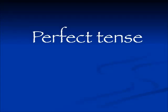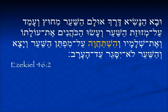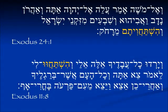Here are some examples from the perfect tense. In 1 Samuel 15:30, hishtachaveti — first person singular with a reversing vav, translated 'I will bow down.' In Deuteronomy 4:19, hishtachavita — second person masculine singular, again with a reversing vav. Ezekiel 46:2 gives hishtachavah — third person masculine singular. Exodus 24:1 gives hishtachavitem — second person masculine plural. And Exodus 11:8 gives hishtachavu — third person masculine plural.